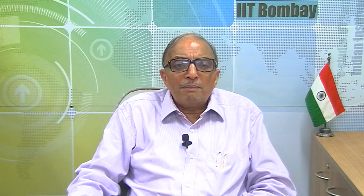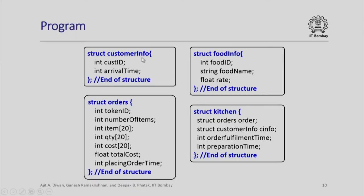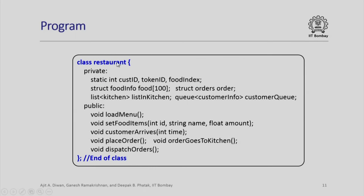Let us look at the computer program. Much of the program is exactly identical to what we had earlier seen. For example, I have customer info, struct food info, orders and kitchen. Please note that for the struct orders, in addition to token id, we now have number of items. For each item we have the item code, the quantity and the cost, and finally the total cost. In addition, we also put inside the structure the placing order time, which should depend upon the number of items ordered with some random value.